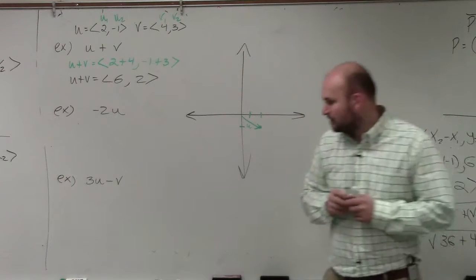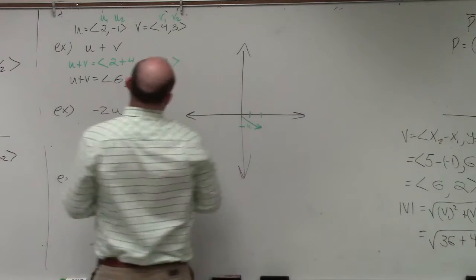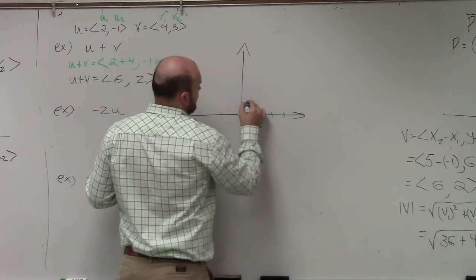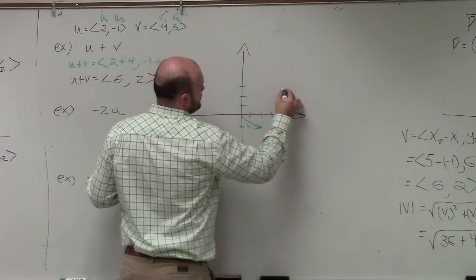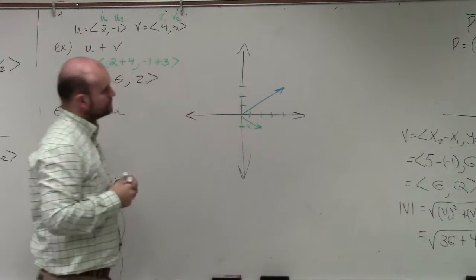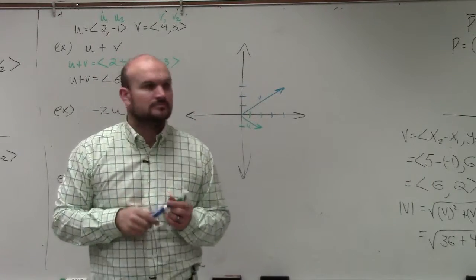Let's do v in another color. Let's use blue. So v is going to be in blue, which would be 4, 4, 3. 1, 2, 3, 4. 1, 2, 3. Does everybody feel pretty comfortable with how I graphed v?